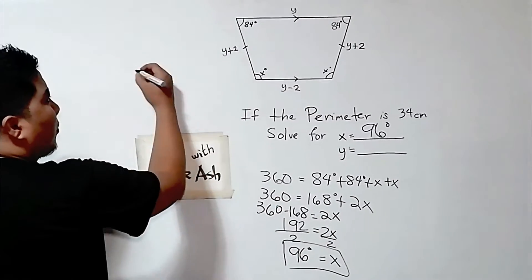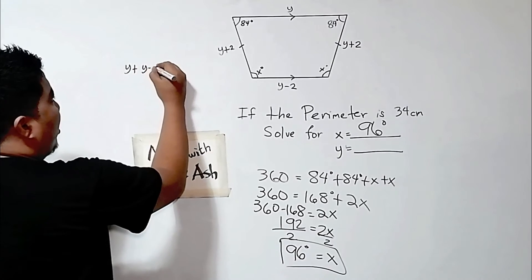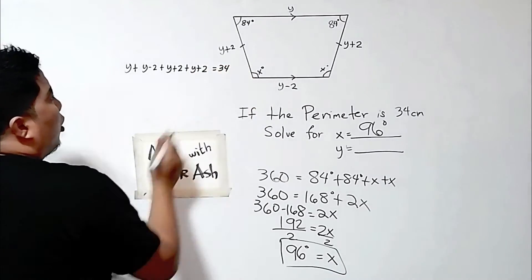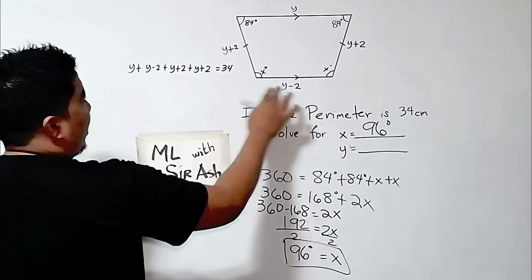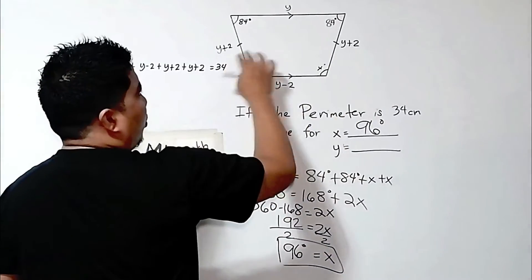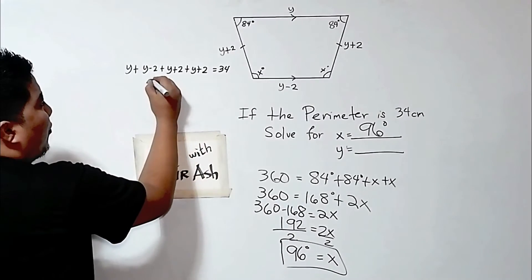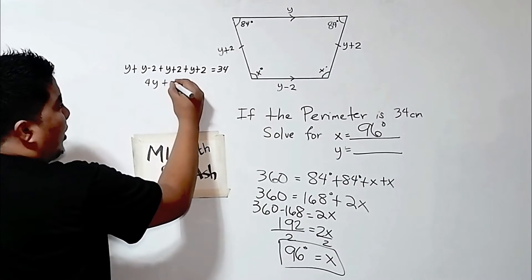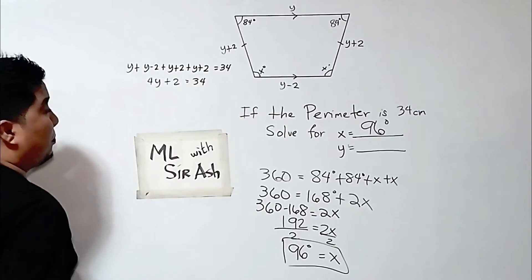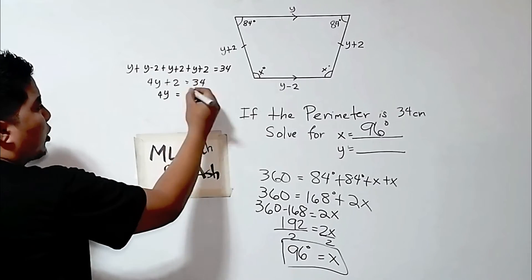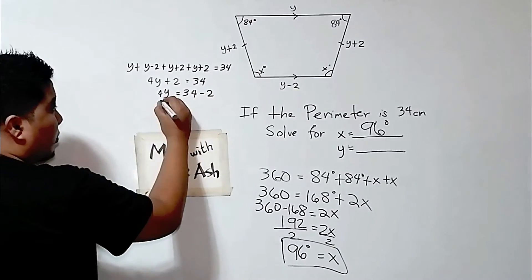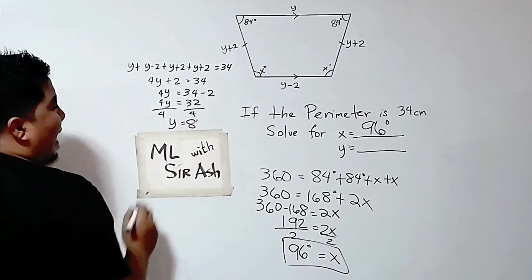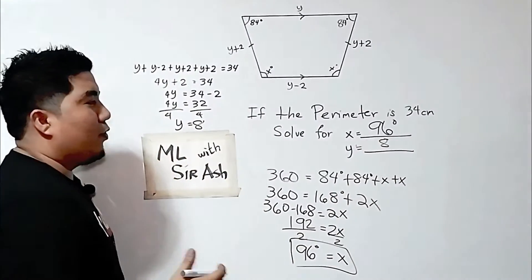So the equation is: y plus (y minus 2) plus (y plus 2) plus (y plus 2) equals 34. Simplifying, you will have 4y plus 2 equals 34. Transposing the plus 2 to the other side gives 4y equals 32. Dividing both sides by 4, you will have y equals 8. So therefore, the value of y is 8.